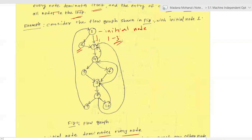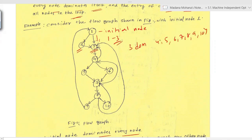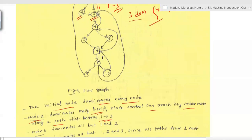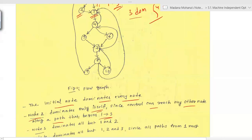Node 3 dominates nodes 4, 5, 6, 7, 8, 9, and 10, because from the initial node every path compulsorily goes through node 3 to reach any of those nodes. Therefore node 3 dominates all nodes except 1 and 2. Node 1 is the initial node, so it's excluded, and node 2 has a direct path from 1.